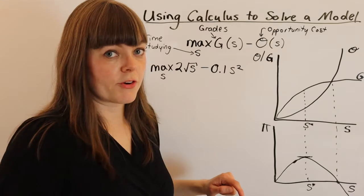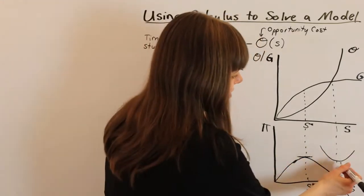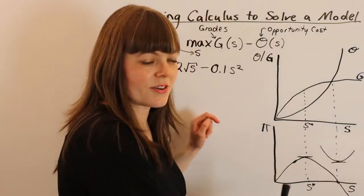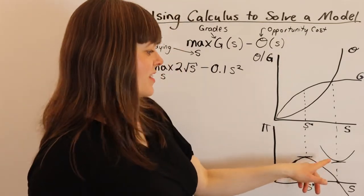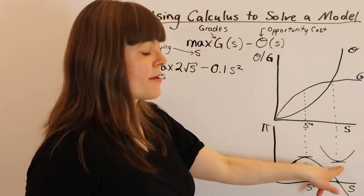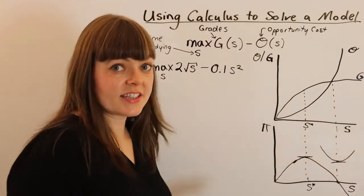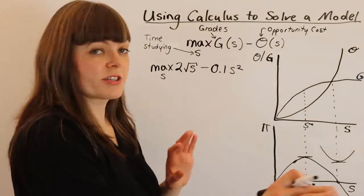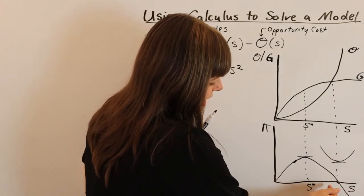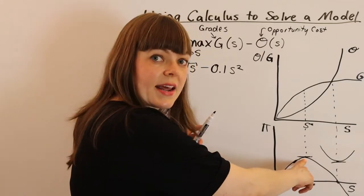That's not going to be enough information, because if we had a function that looked like a minimum, the slope of the tangent at that point is also equal to 0, and that's definitely not a maximum. So a slope of 0 is going to tell us either we're at a maximum or we're at a minimum. We're going to need another condition besides just the first order condition to help us figure out which of those two it is. But the first step is to find at what value for time spent studying we get a tangent of 0.